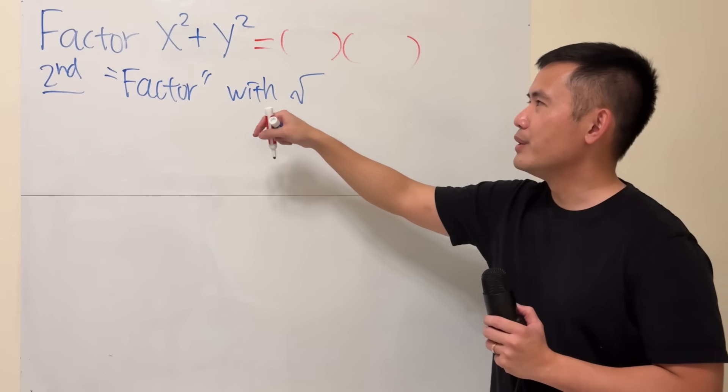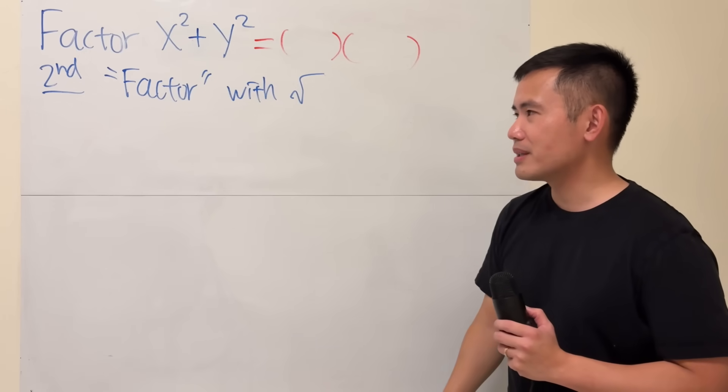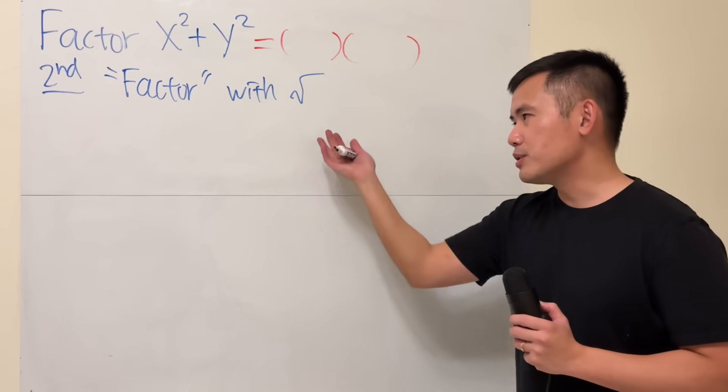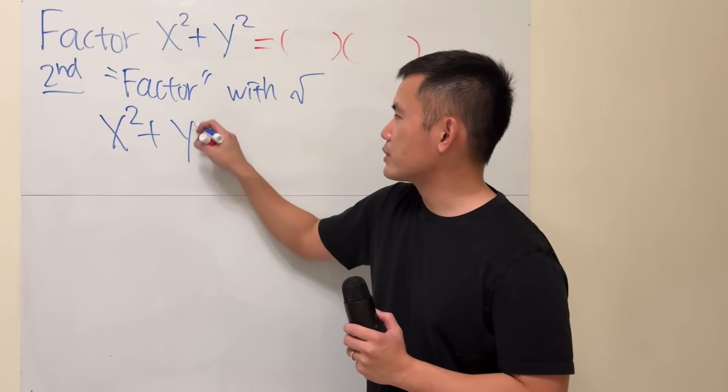You can factor x squared, and then you get like x to negative 2 on the bottom, but don't do that. And then let me just demonstrate. So, here, we have a sum of 2 squared. x squared plus y squared.